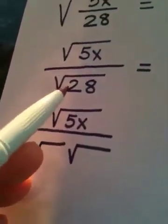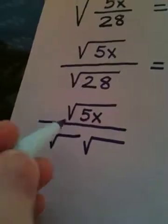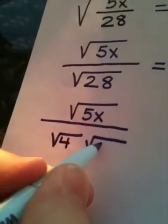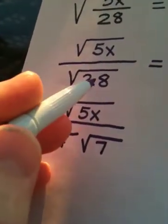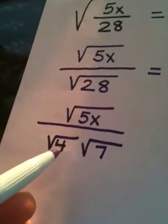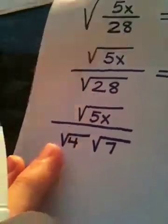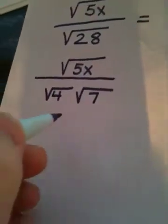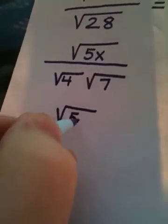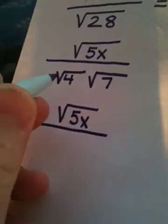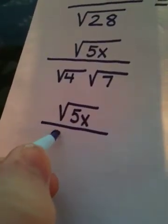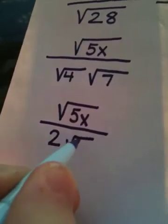You know, pay attention to the fact that 28 is really 4 times 7. So the square root of 28 would be the square root of 4 times the square root of 7. And that would become 2 radical 7.